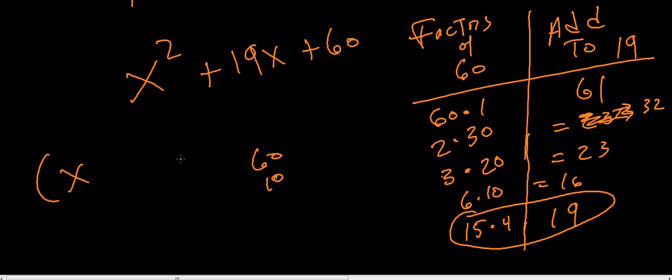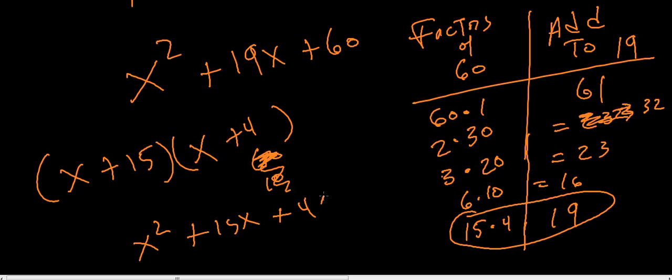So now, you take your x, or this right here, the x plus 15 times x plus 4. You FOIL it out, you get x squared plus 15x plus 4x plus 60. So you get x squared plus 19x plus 60.